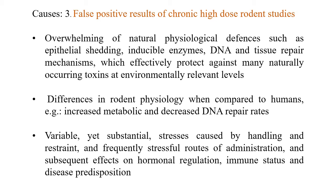The third cause is false positive results from chronic high-dose rodent studies. The overwhelming of natural physiological defenses — such as epithelial shedding, inducible enzymes, and DNA and tissue repair — effectively protects against many naturally occurring toxins at environmental levels. These animals can withstand high content of toxins due to their physiology. In rodent physiology compared to humans, increased metabolic rates and decreased DNA repair rates are present.